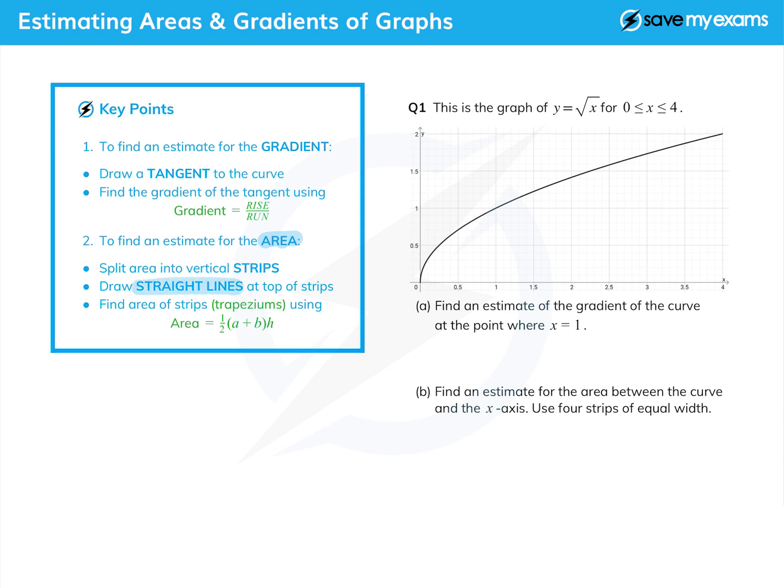We're then going to draw straight lines at the top of the strips instead of the curve to replace the curve. Now each strip is a trapezium or possibly a triangle, and the area of a trapezium is a half of a plus b, the two parallel sides, and h is the perpendicular distance between them, in this case the strip width.